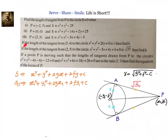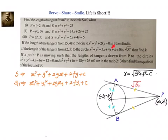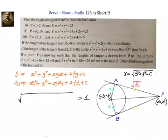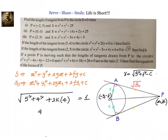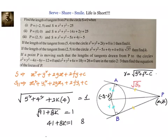Next problem: if the length of the tangent from (5, 4) to the circle x² + y² + 2ky = 0 is 1, find k. We substitute (5, 4) and set √S₁₁ = 1. So S₁₁: 5² + 4² + 2k(4) = 1². That gives 25 + 16 + 8k = 1, so 41 + 8k = 1, then 8k = −40, giving k = −5.